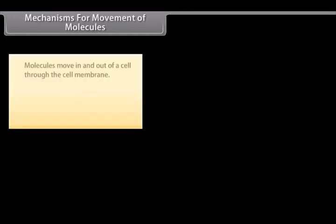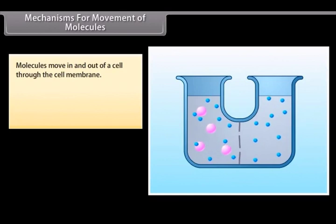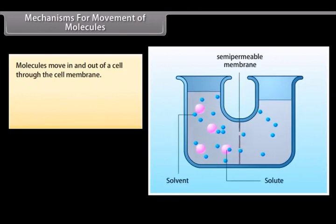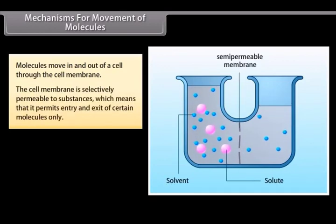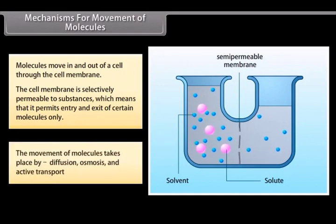Mechanisms for movement of molecules. Molecules move in and out of a cell through the cell membrane. The cell membrane is selectively permeable to substances which means that it permits entry and exit of certain molecules only. The movement of molecules takes place by diffusion, osmosis and active transport.